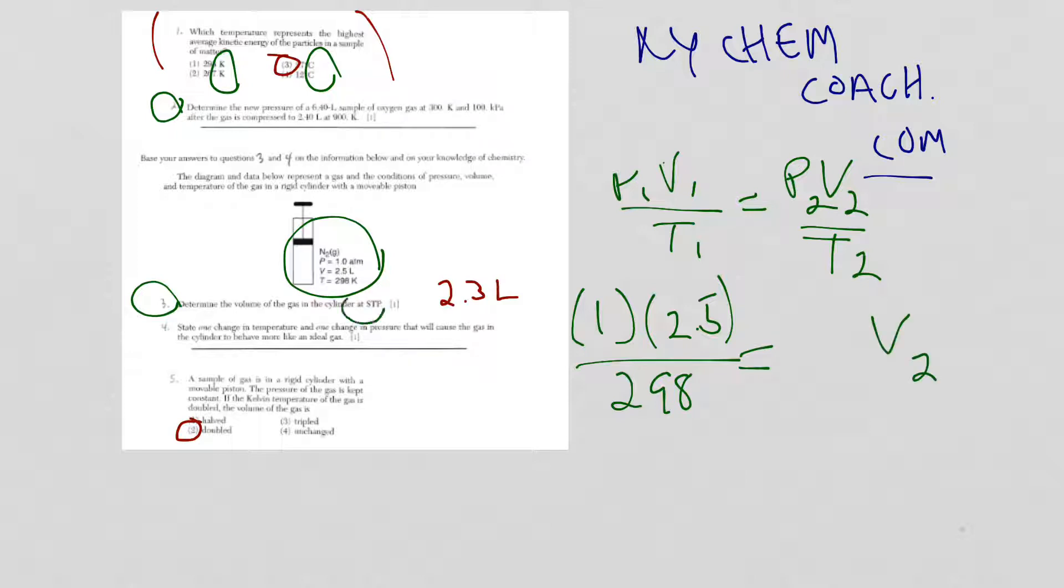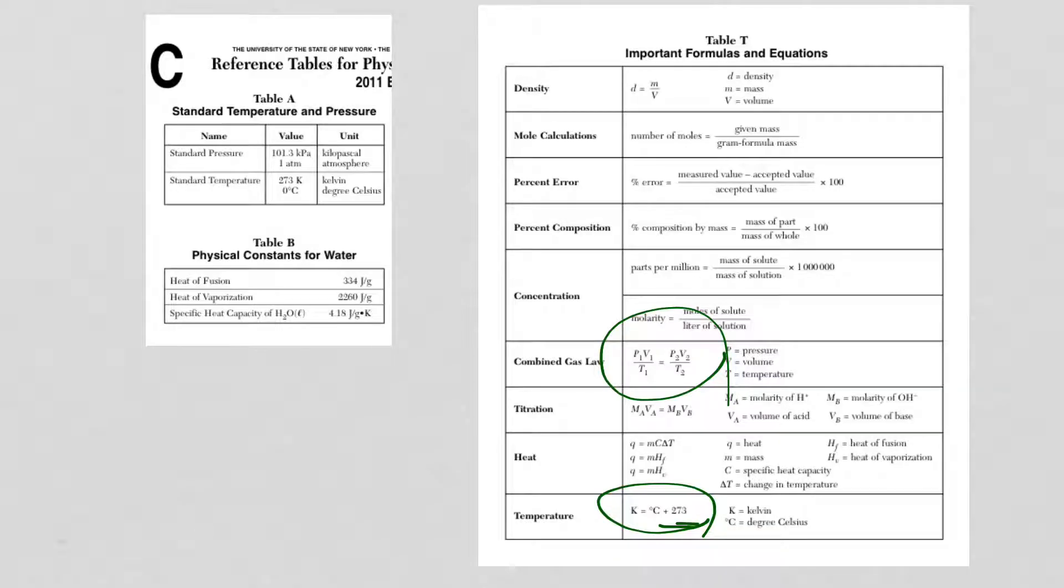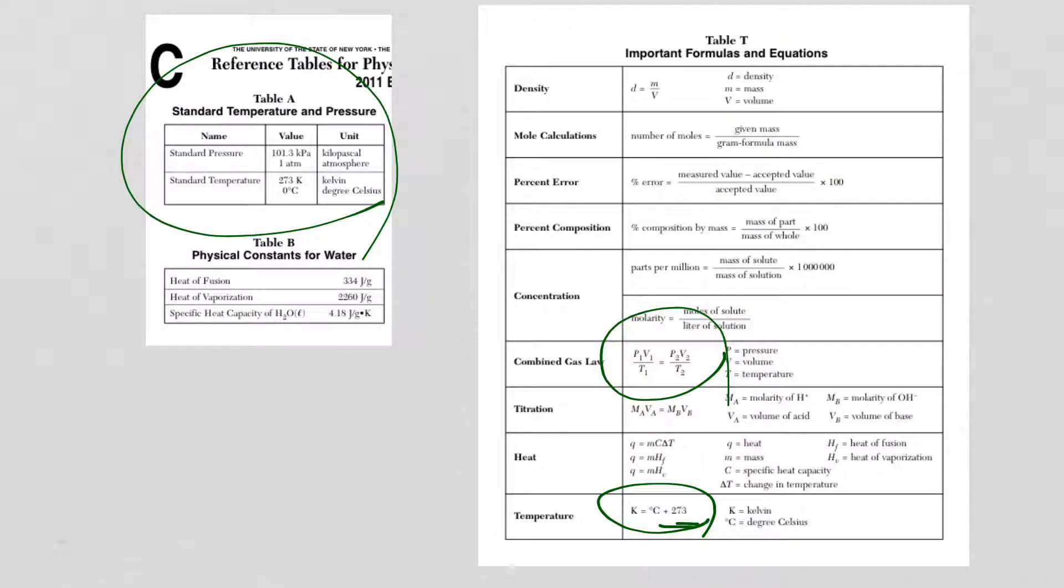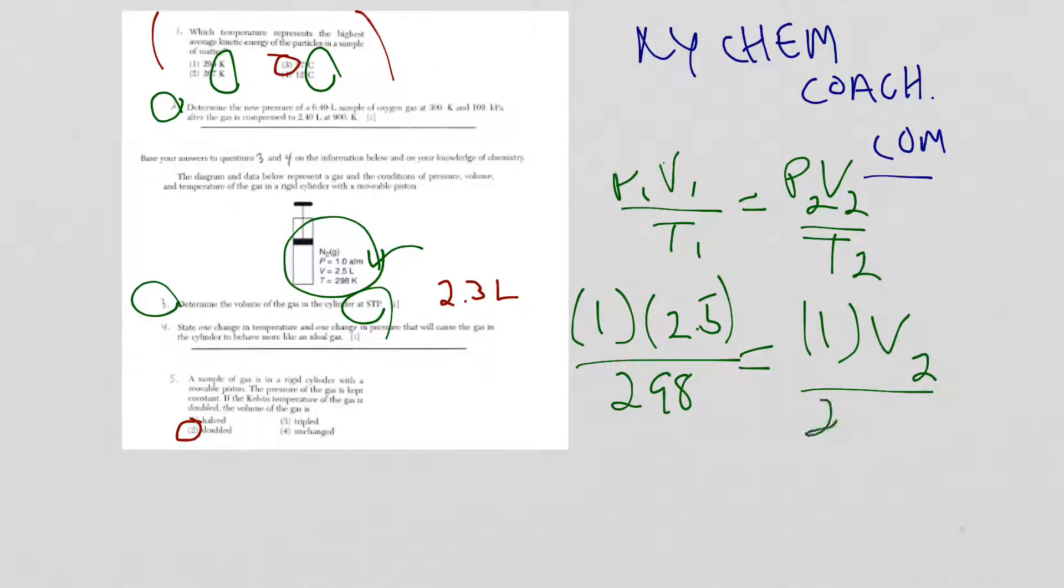I have 1 atm, 2.5 liters, and 298 Kelvin. Now we want to determine the volume, V2, at STP. If you forget, standard temperature and pressure are on the front of the reference table. I need to be consistent with my pressure. I started with atm, I'm going to end with 1 atm, so pressure stays constant. For temperature, use Kelvin, don't use Celsius. So 273. Cross multiply and divide, take it in steps, and the answer is 2.3 liters.